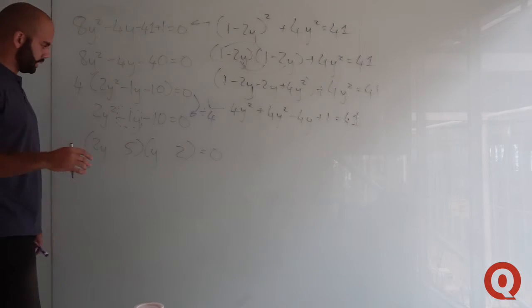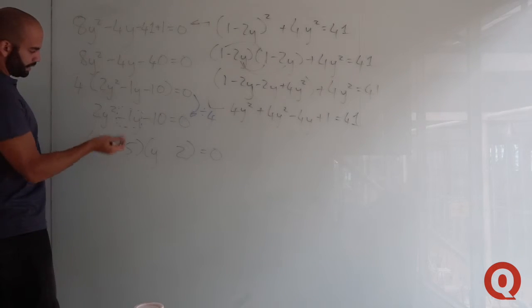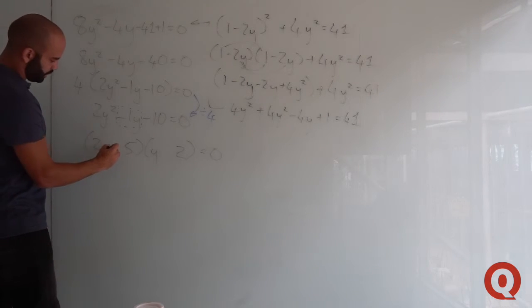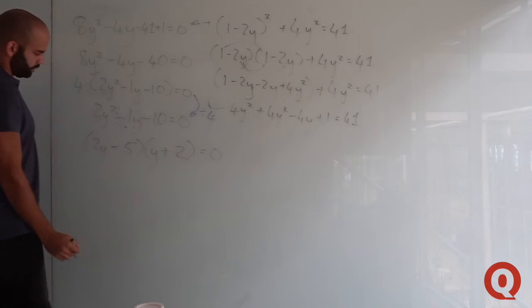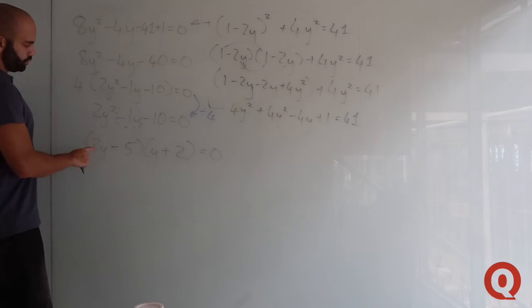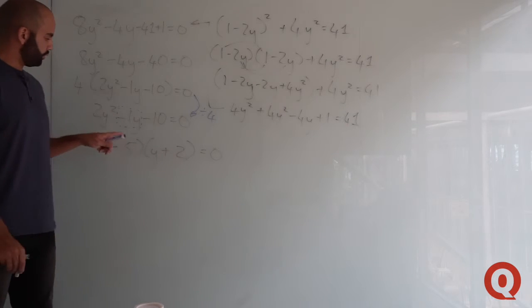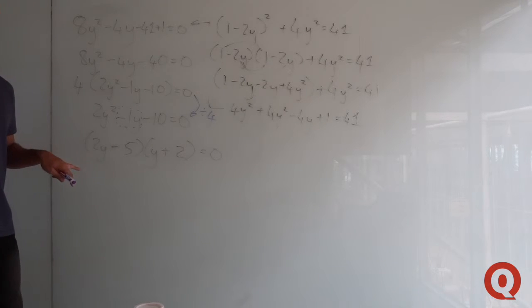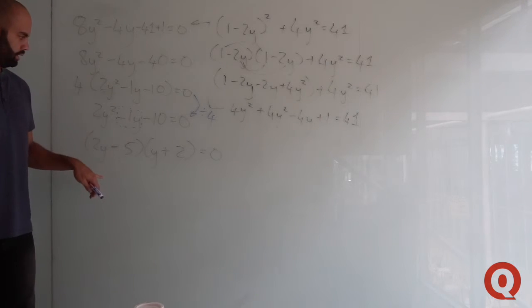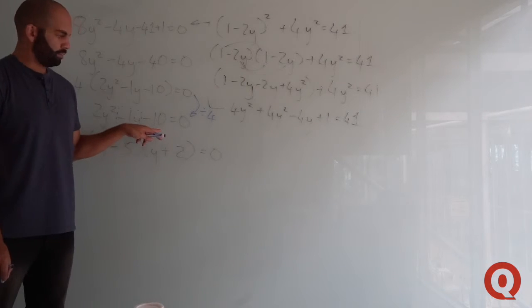Make sure your signs are correct. You'd want the highest term to have a negative, so (2y minus 5)(y plus 2) equals 0. This works out: 2y times y gives 2y squared, 2y times 2 gives 4y, minus 5 times y gives minus 5y, which combines to minus y, and minus 5 times 2 gives minus 10.